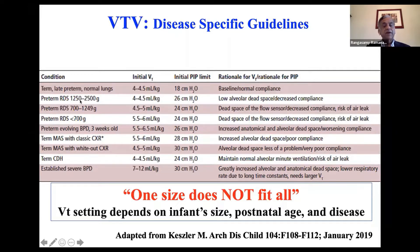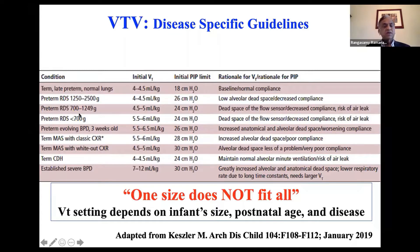For babies with RDS, we have to allow a little higher pressure, but the tidal volume is the same — allow the machine to use higher pressure. In the 700 to 1249 gram range, you actually have to use a slightly higher tidal volume, like 4.5 mL per kilo.